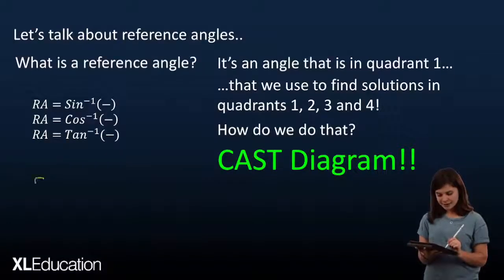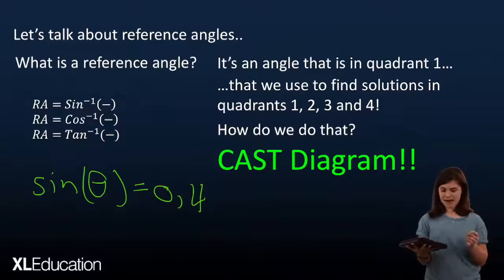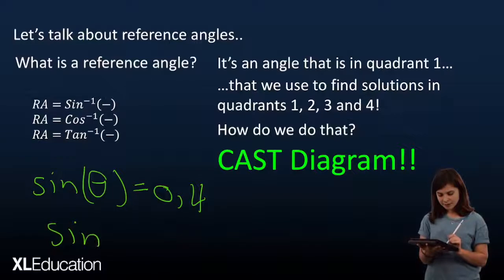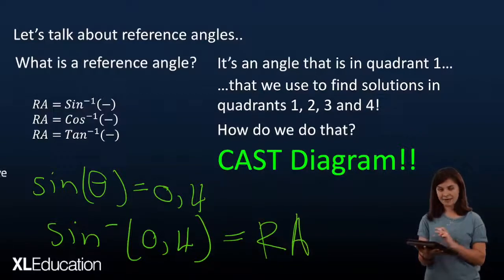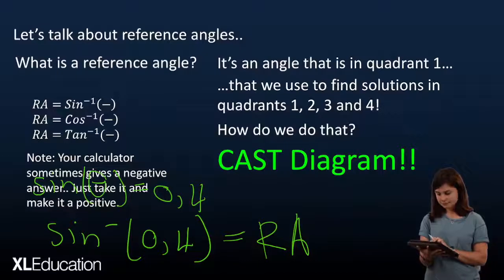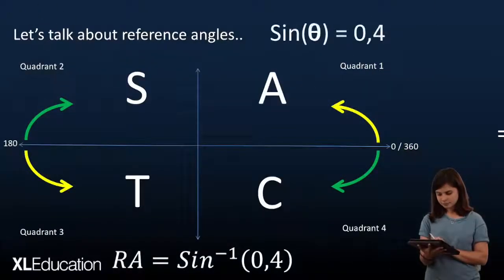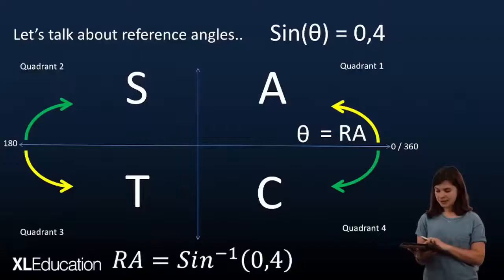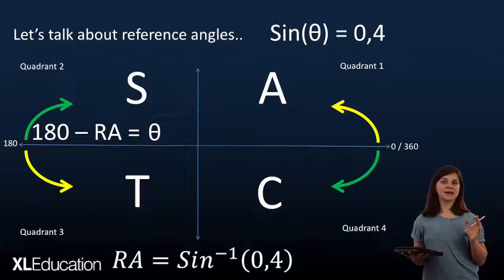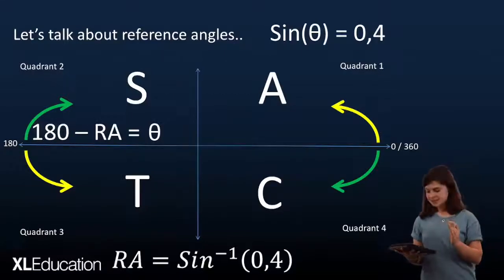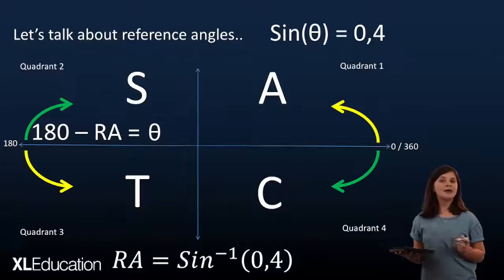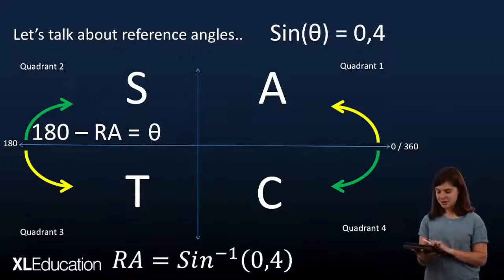So, for example, we had sine of theta equals 0.4. Now, to find our reference angle, we're going to say sine inverse of 0.4 of our y value gives us our reference angle. So, that reference angle in our first quadrant is going to be theta. In our second quadrant, our theta is going to be 180 minus that reference angle. In the third quadrant, same concept, 180 plus our reference angle gives us theta. And in our fourth quadrant, 360 minus our reference angle will give us theta.